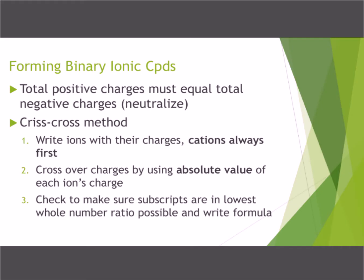Yesterday we talked about monatomic ions. Today we're going to talk about how we put those together and form binary ionic compounds. Binary means two ions that make up the compound — specifically two monatomic ions, single atoms, single elements, not polyatomics. We'll get to the polyatomics a little bit later in this lesson.